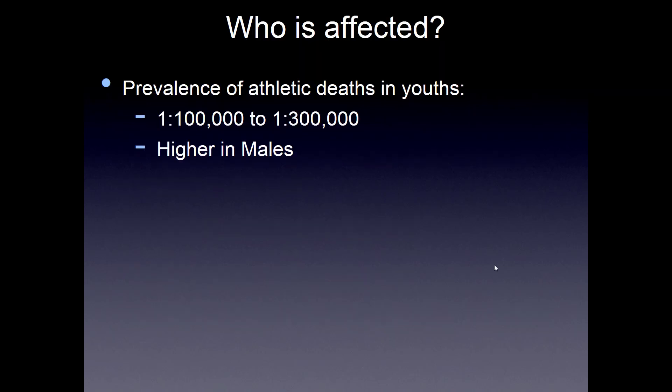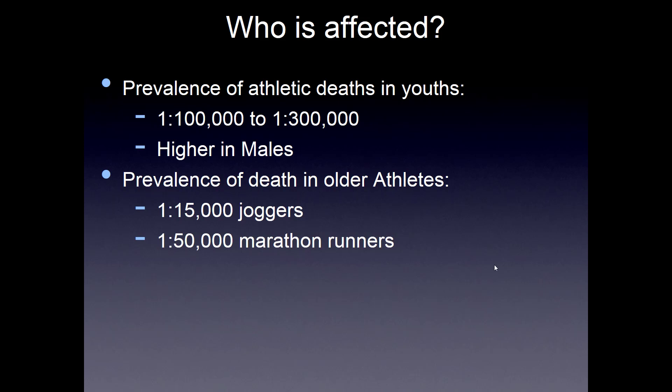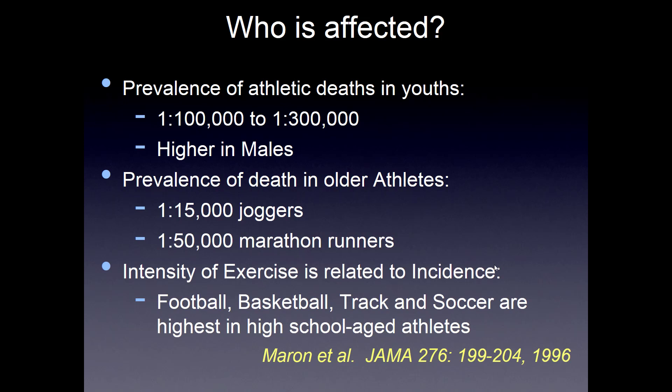Who's affected? The prevalence of athletic deaths in youth is about 1 in 100,000 to 1 in 300,000, and the incidence is higher in males. The prevalence of death in older athletes is 1 in 15,000 joggers and 1 in 50,000 marathon runners. The intensity of exercise is related to the incidence — football, basketball, track, and soccer are the highest risk sports in high school-aged athletes for sudden cardiac death.